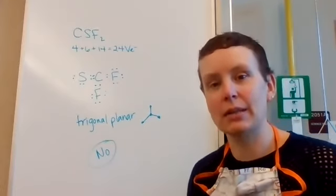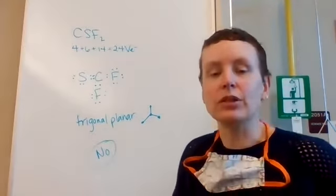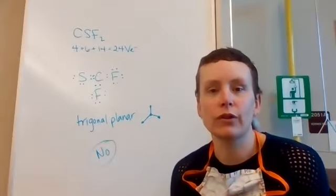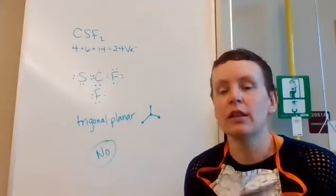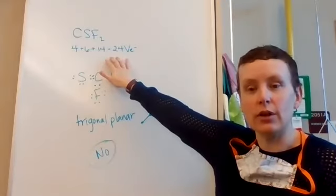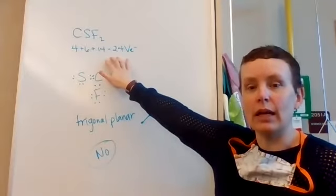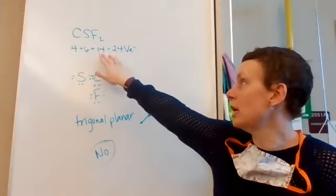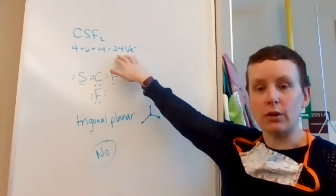So in the canvas assignment today, the warm-up was to take the molecule CSF2 through the first four columns of the shape slab. So the very first thing that we did with CSF2 is to add those valence electrons and when we do that, we end up with 24. So four from the carbon, six from the sulfur, seven from each fluorine and we get a total of 24.